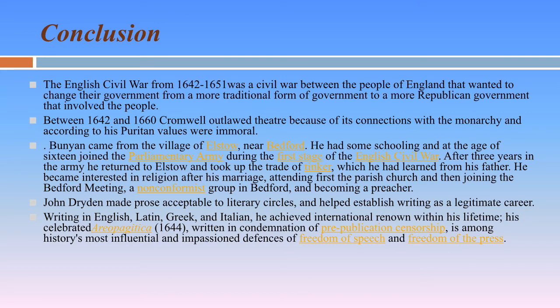This is the end of our lecture. Conclusion: The English Civil War from 1642 to 1651 was a civil war between the people of England that wanted to change their government from a more traditional form to a more republican government that involved the people. Between 1642 and 1660, Cromwell outlawed the theatre because of its connections with the monarchy and because, according to his Puritan values, it was immoral.